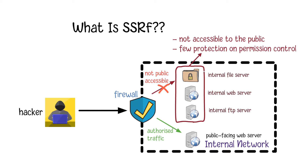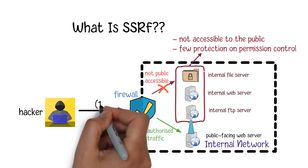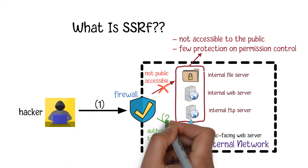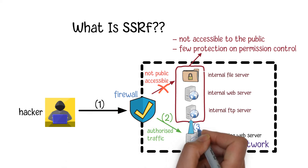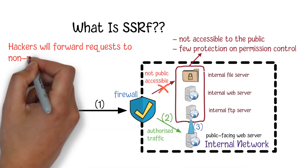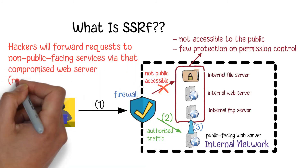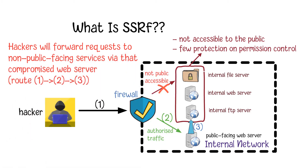That means if there are some vulnerable codes existing on the public-facing web server, hackers can take advantage of that compromised web server to forward requests to other internal services and gain unauthorized access to data. This is what SSRF is about.